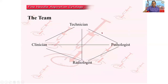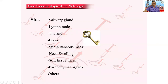As I mentioned earlier, it is a teamwork between the clinician, the pathologist, the technician, and the radiologist. What are the common sites from which we can do an FNAC? It can be a salivary gland, lymph node, thyroid, breast, subcutaneous mass, neck swelling, etc.